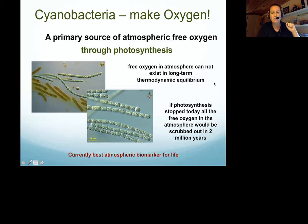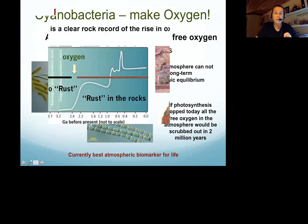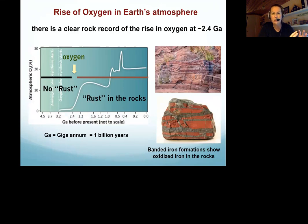Free oxygen is so reactive that it can't exist for very long without constant resupply. If photosynthesis stopped today, oxygen would be scrubbed out of our atmosphere in about 2 million years. I like to call it the best atmospheric biomarker — as we search for exoplanets beyond Earth. If we found an exoplanet with an oxygen atmosphere of 10%, 15%, or 20%, I would bet my house that there's life generating that oxygen. And so cyanobacteria and that rise in oxygen completely changed the face of the planet.